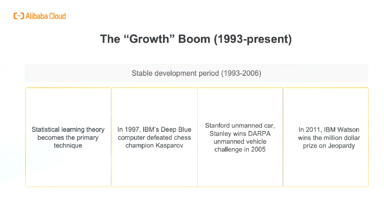Since 1993, it is the third wave of artificial intelligence. During the period of stable development from 1993 to 2006, statistical learning theory became the mainstream. In 1997, IBM's Deep Blue took 90 moves to defeat world chess champion Garry Kasparov. In 2005, DARPA's winning vehicle was Stanford University's stock diesel-powered Volkswagen Touareg R5, which completed the entire course in 6 hours, 53 minutes, and 58 seconds. In 2011, IBM's Watson won the million-dollar prize on the intelligent quiz contest Jeopardy.